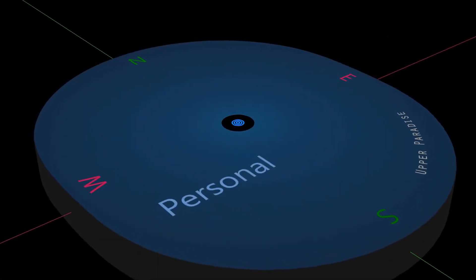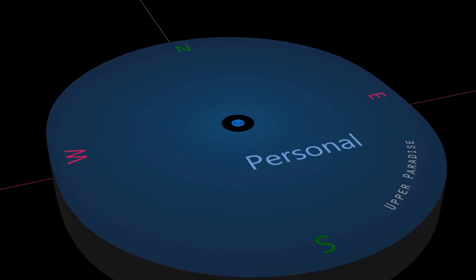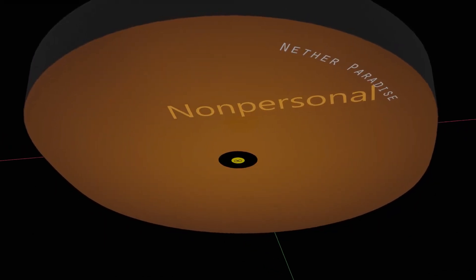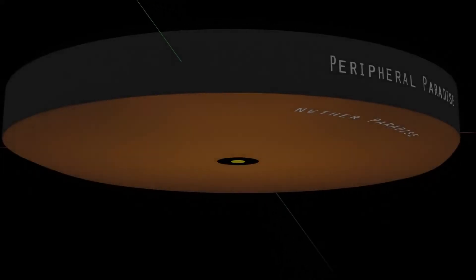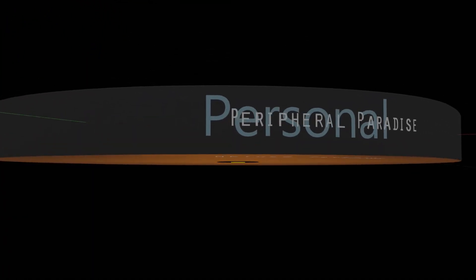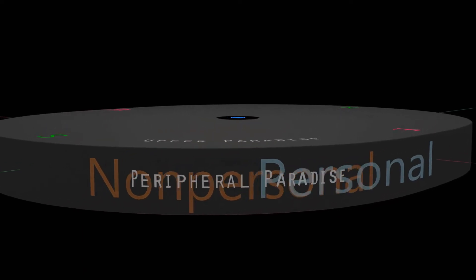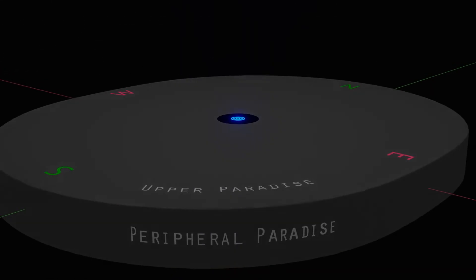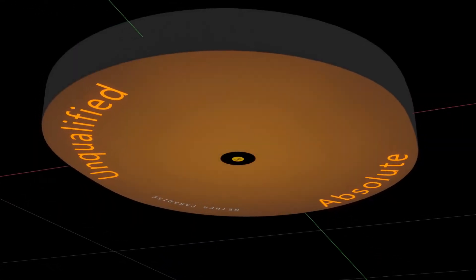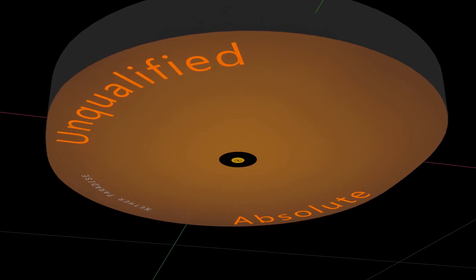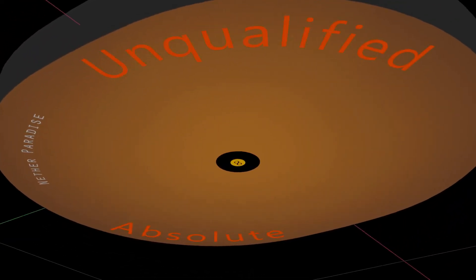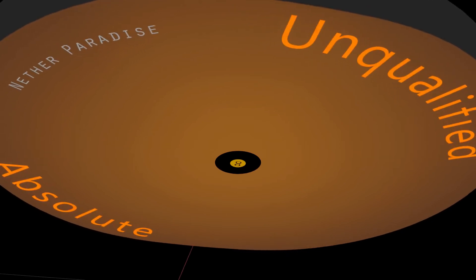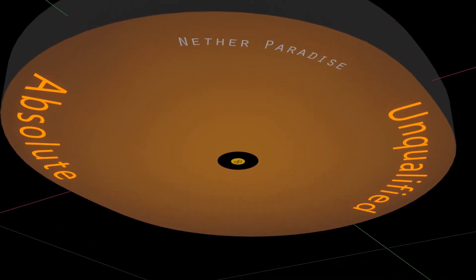We speak of that surface of Paradise which is occupied with personality activities as the upper side, and the opposite surface as the nether side. The periphery of Paradise provides for activities that are not strictly personal or non-personal. The Trinity seems to dominate the personal or upper plane. The Unqualified Absolute the nether or impersonal plane. We hardly conceive of the Unqualified Absolute as a person, but we do think of the functional space presence of this absolute as focalized on nether Paradise.